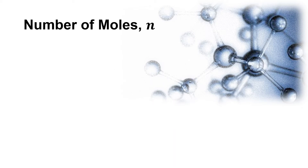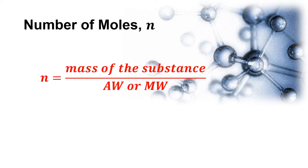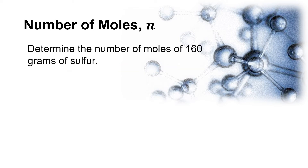For determining the number of moles of a substance, we have the formula: the number of moles is equal to the mass of the substance divided by the atomic weight or molecular weight. It depends on the given substance — if it is an element, we use its atomic weight; if it is a compound, we compute for the molecular weight first. Let us now solve a problem involving moles.